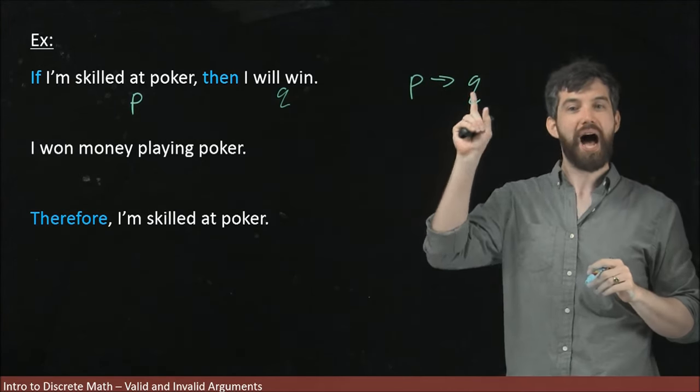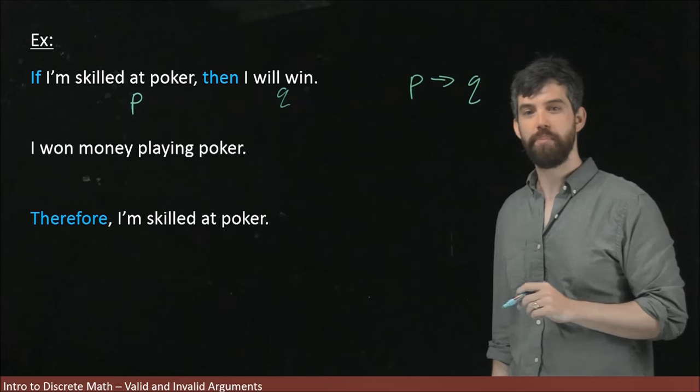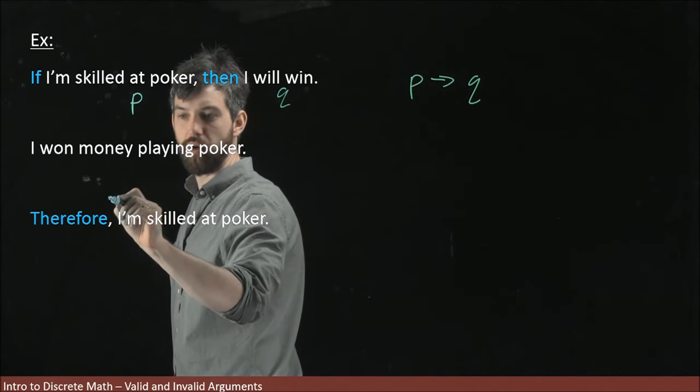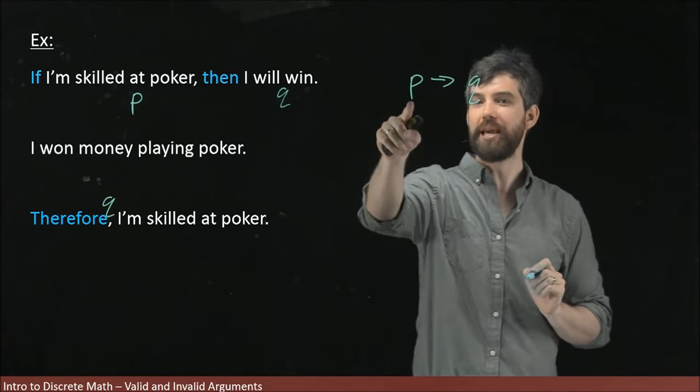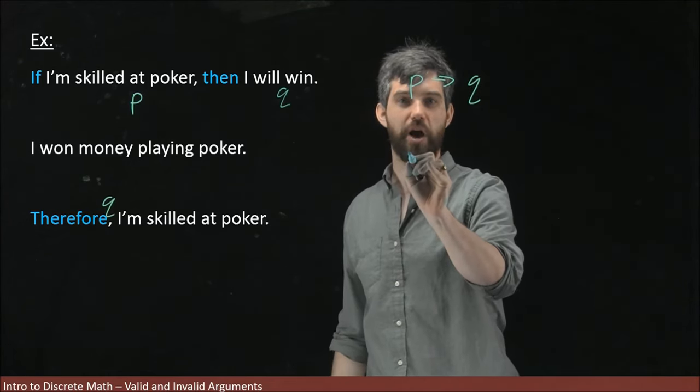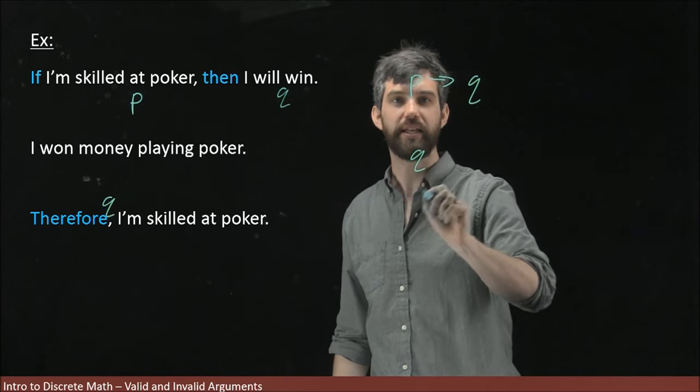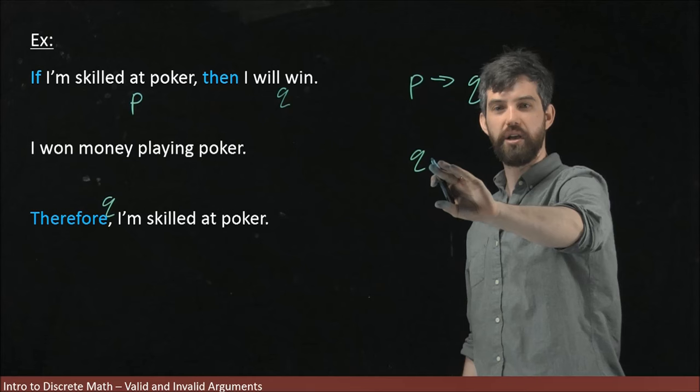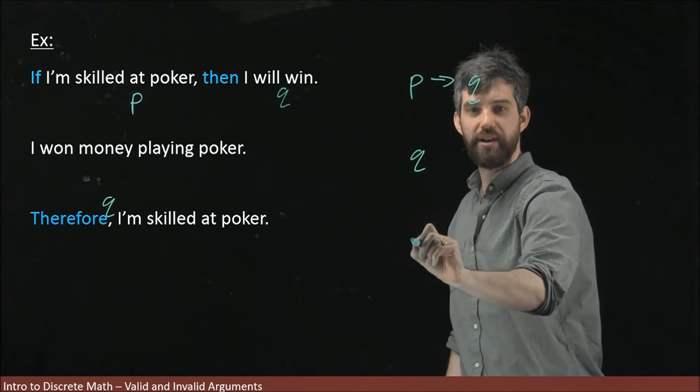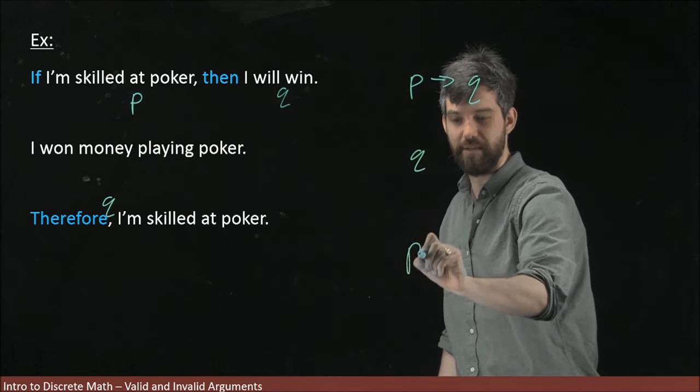Next up, I say I won money playing poker. So this is asserting Q. And then what we're saying is P implies Q, and I'm going to copy it over here so we have it all in place. P implies Q, then you reach the conclusion and you're going to get: I'm skilled at poker.